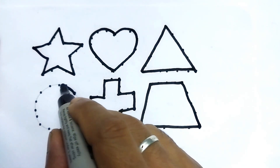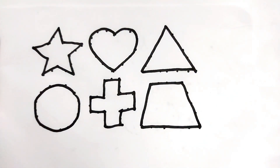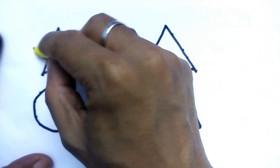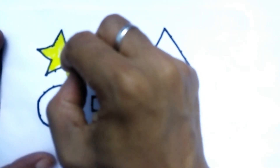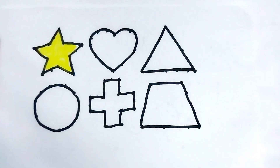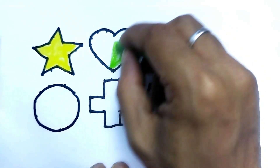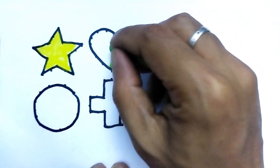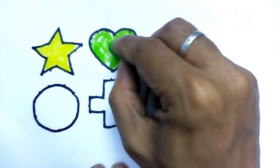This is a circle — yellow color. This is a yellow color star. The heart is green color. Yes, this is a green color heart.